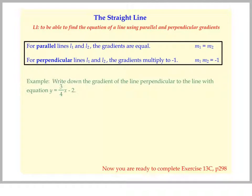Now, with a question like this, we're given the gradient of a line. So let's say m1 equals 3 quarters because that's the coefficient of x.